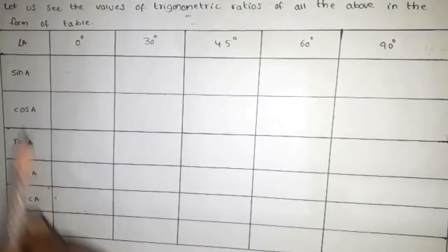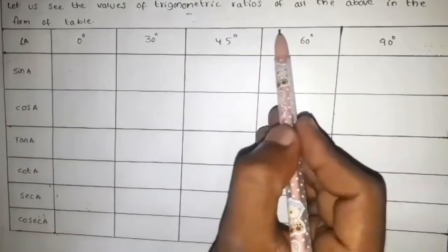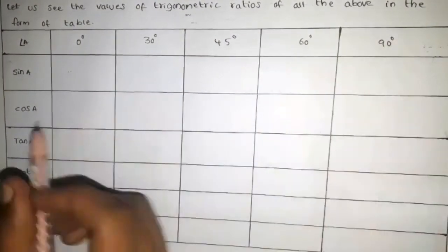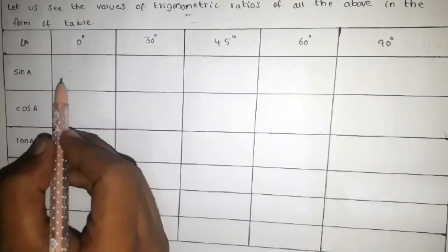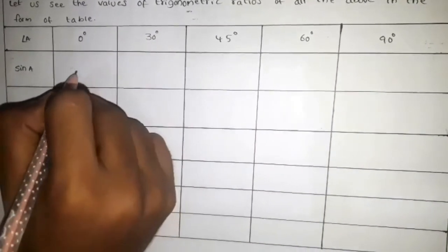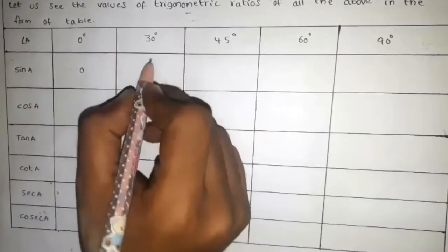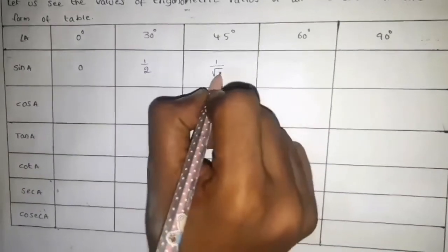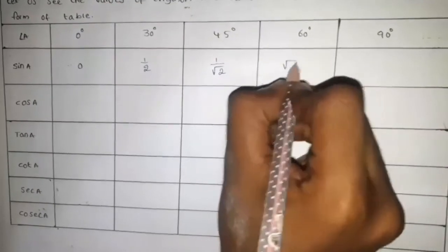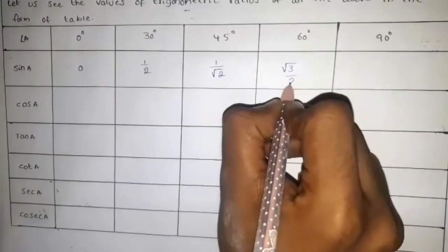We know the trigonometric ratios, the sides of the triangle, and the reciprocals. Now we have to know the angles of trigonometric ratios. Let us see the values in the form of a table. For angle A equal to 0°, 30°, 45°, 60°, and 90°: sin 0° = 0, sin 30° = 1/2, sin 45° = 1/√2, sin 60° = √3/2, sin 90° = 1.